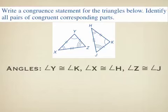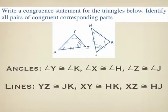We also need to see if we have corresponding congruent sides. Tick marks tell us the side lengths — a side with one tick mark is congruent to another side with one tick mark in the same picture. Side YZ is congruent to side KJ because they each have one tick mark. Side XY is congruent to side HK, and side XZ is congruent to side HJ.